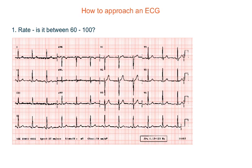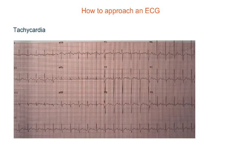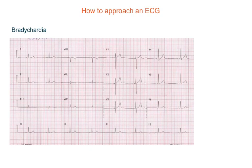Now compare this ECG with this one. Here, the distance between the two R waves is decreased — they have come closer to each other. That means the heart is beating fast; it's tachycardia. Similarly, look at this ECG where the R waves are quite far away from each other — the distance has increased, the number of boxes has increased. This means the heart is beating slower than normal, so that's bradycardia.